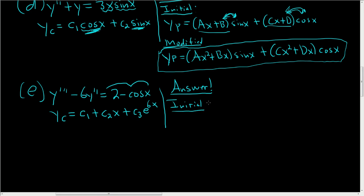So let's look at our initial. When you look at the initial, you only look here. So the initial will be y sub p equals a. The a takes care of the two. And now we have a cosine. So that means we need to involve both sine and cosine. So b sine x plus c cosine x. Now let's look at the modified.